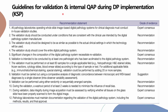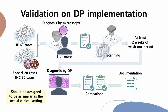For validation and internal quality assurance programs during implementation of new equipment, KSP recommends each institute follow 12 guidelines, prepared based on the CAP guidelines for DP published in 2013. Briefly, one or more pathologists should make diagnoses of 60 H&E slides, 20 special stains, and 20 IHC stains under the microscope, and after a two-week washout period, recheck with WSI. Cases should be as similar as possible to the actual clinical setting, and the results of the two methods should be compared with concordant and discordant cases documented.